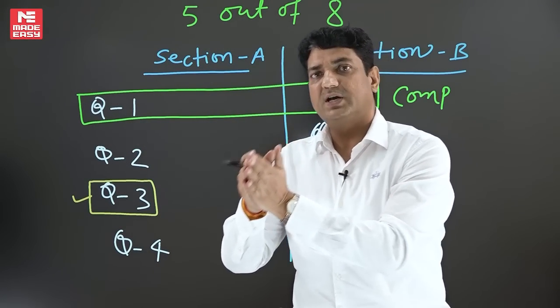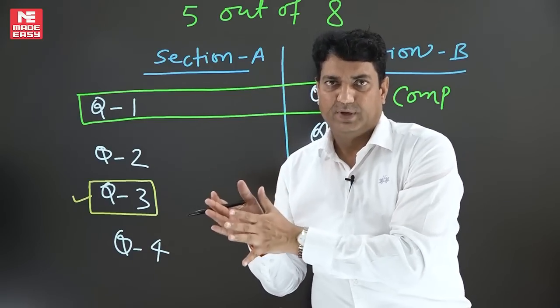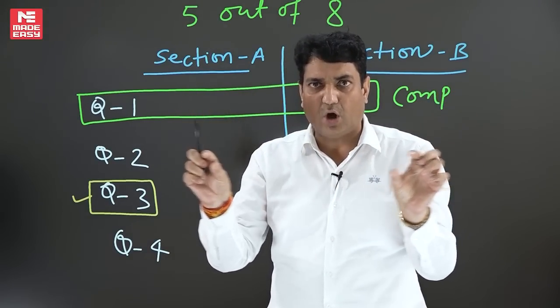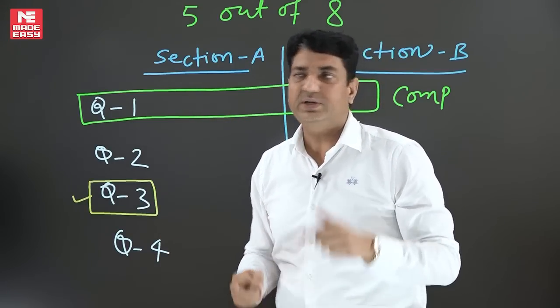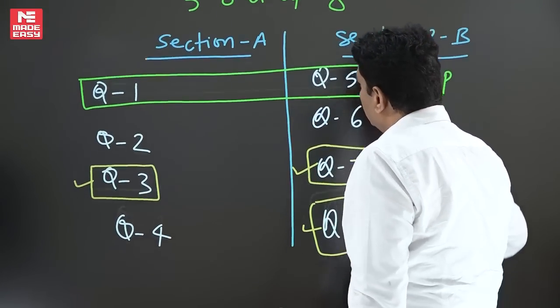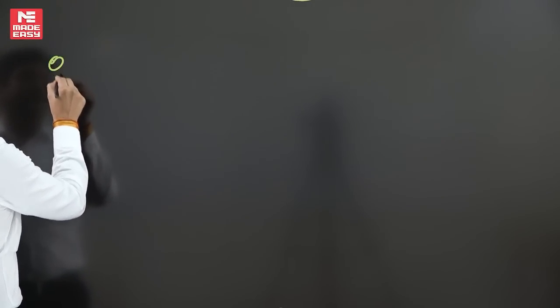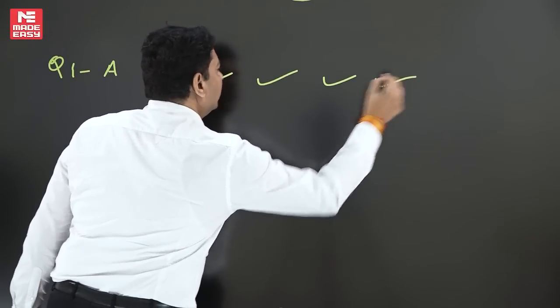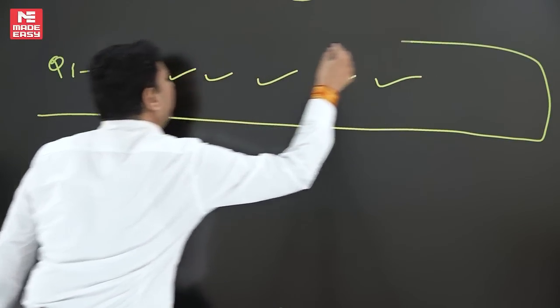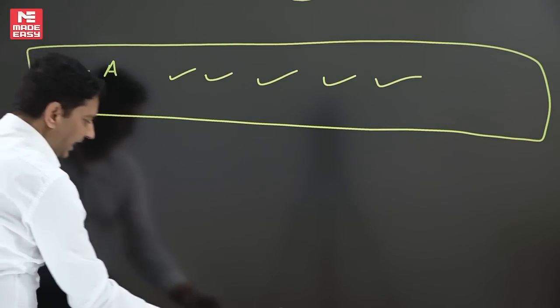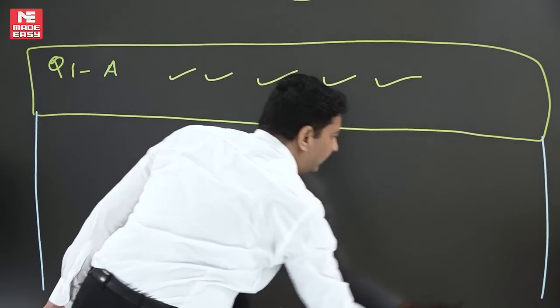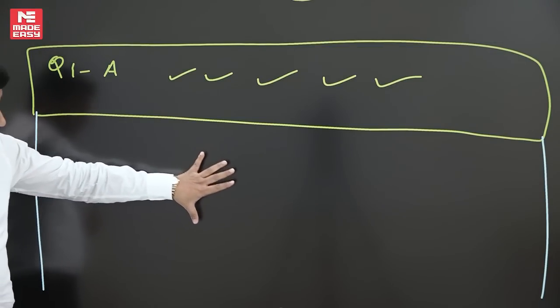Now the turn comes to answer. You are given question paper and you are given question-cum-answer booklet series, Q-CAP. Question-cum-answer booklet series also has printed question at the top and a fixed space to answer that question. There will be a question printed, let us say question number 1A, and this is the space occupied by the question, and to answer this question there is a fixed space given.